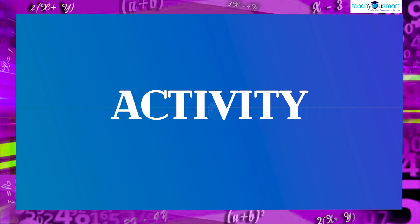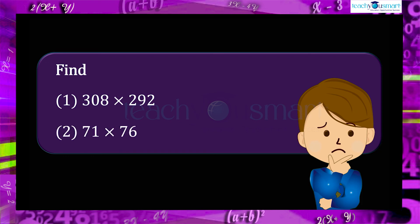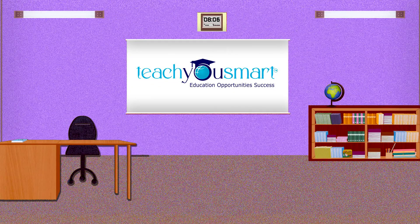Before winding up, by doing an activity, let's check how much you understood. Find: first, 308 multiplied by 292; second, 71 multiplied by 76. That's all about this chapter. See you all in the next class with another exciting chapter.